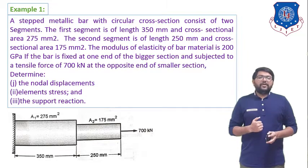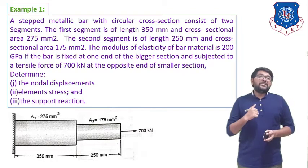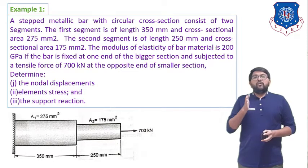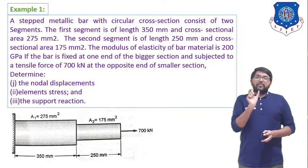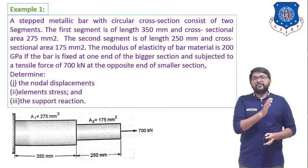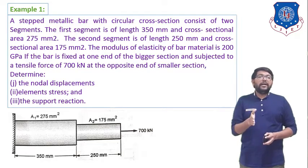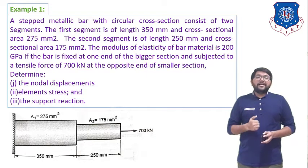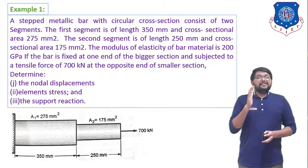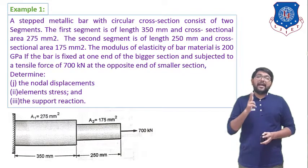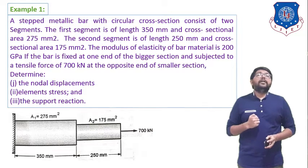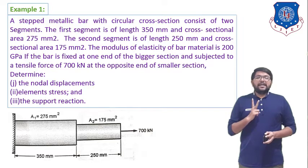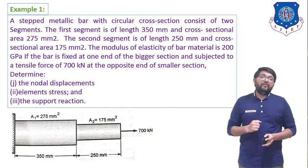The modulus of elasticity of the bar material is 200 GPa. We must convert to Newton per mm square: since 1 MPa = 1 N/mm², and 1 GPa = 10³ MPa, therefore 200 GPa = 200 × 10³ N/mm². The bar is fixed at one end (the bigger section) and subject to a tensile force of 700 kN at the other end. We need to find: (1) nodal displacement, (2) element stresses, and (3) support reaction.